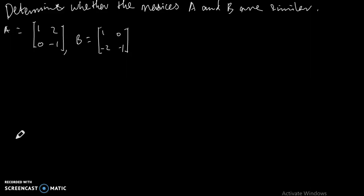Here we need to determine whether the matrices A and B are similar. A is a 2x2 matrix given by [1, 2; 0, -1] and B is also a 2x2 matrix given by [1, 0; -2, -1].